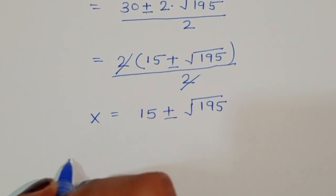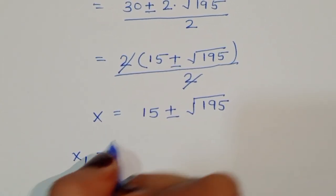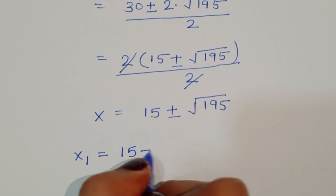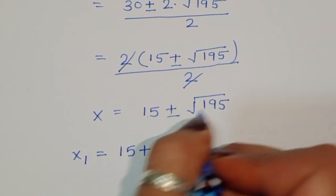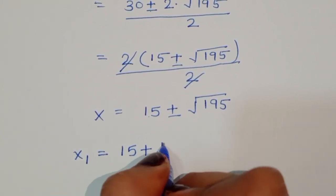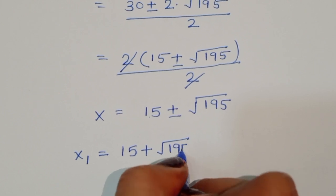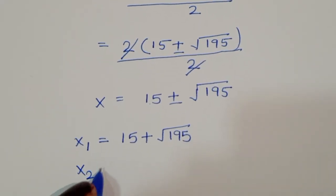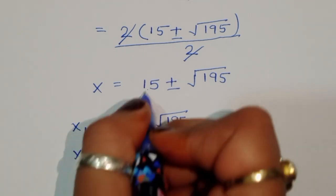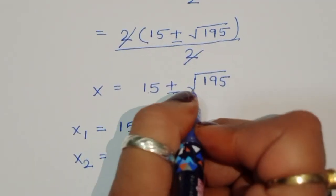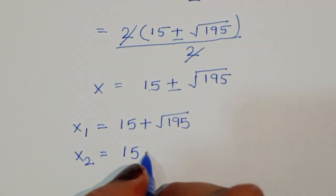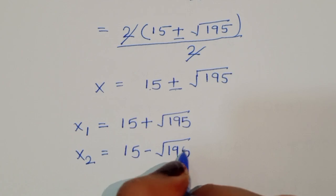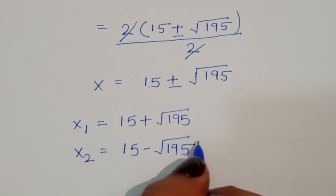So x1 is equal to 15 plus square root of 195, and x2 is equal to 15 minus square root of 195. These are the two values of x.